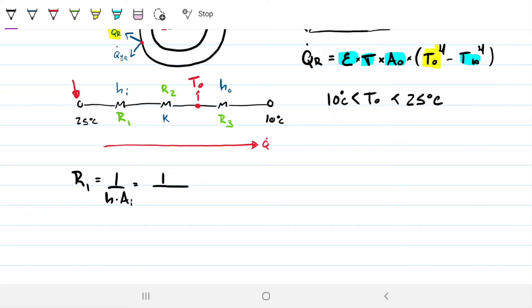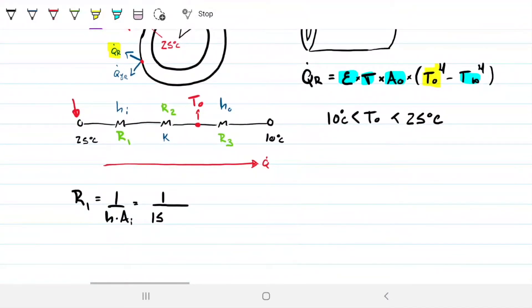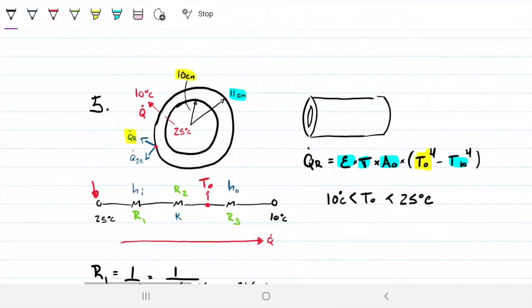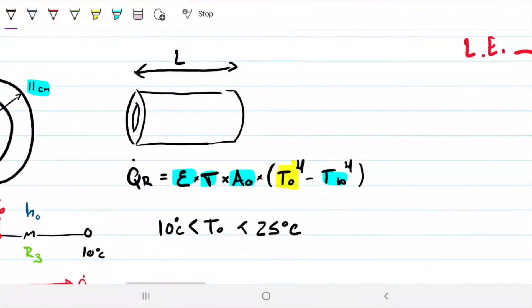So that was given. The internal convective coefficient was given as 15. And then the internal area is this area here, and that is related to R1, the one with 10 centimeters. So that will be 2 pi R, circumference, times 10 to the minus 2 to have it in meters, and then multiply by L, the length. I don't know the length. I don't know this length here. I have no idea what this length is.